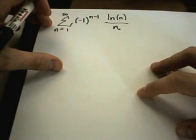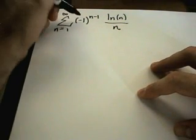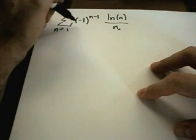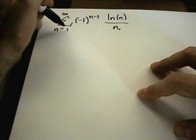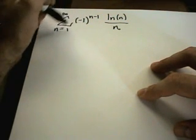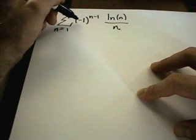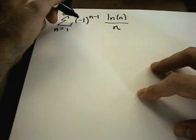Alright, so here's a couple more examples of alternating series. So again I see this negative 1. It's hopefully pretty easy to convince yourself that if you plug in n equals 1, n equals 2, n equals 3, you will be getting an alternating series.